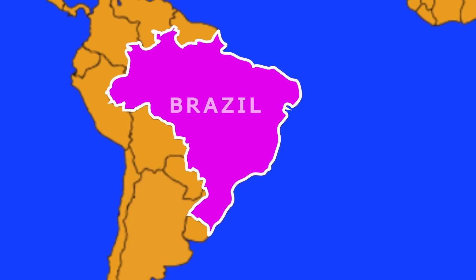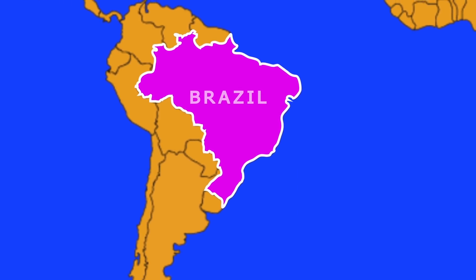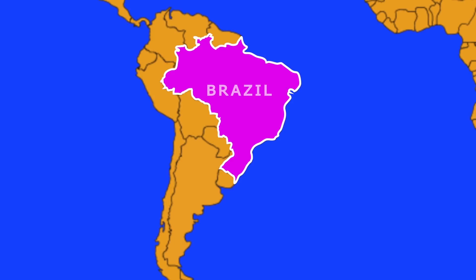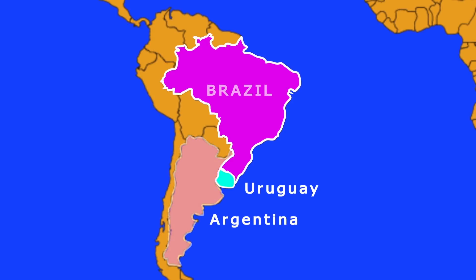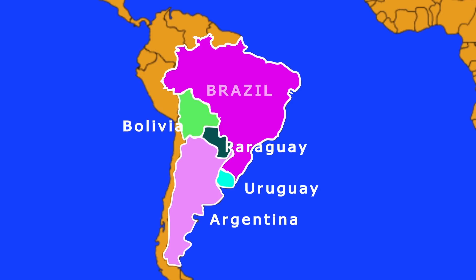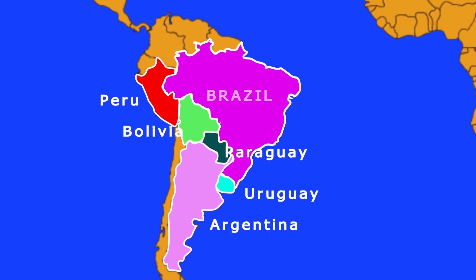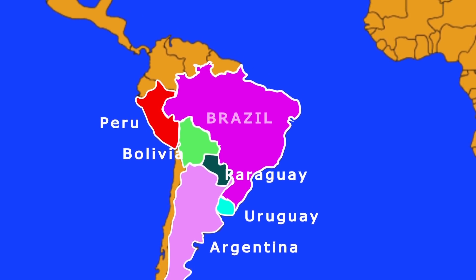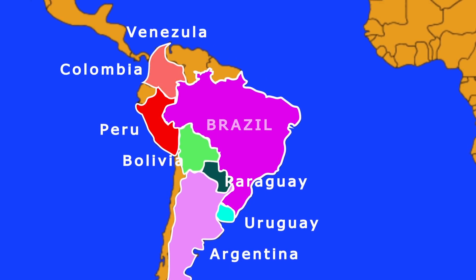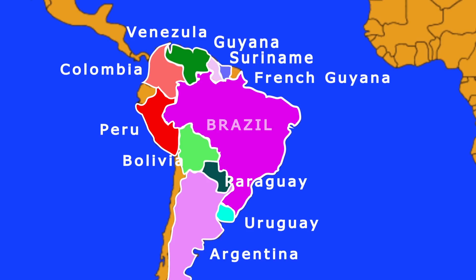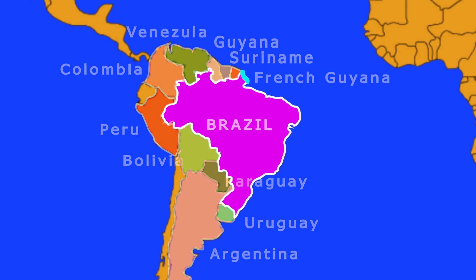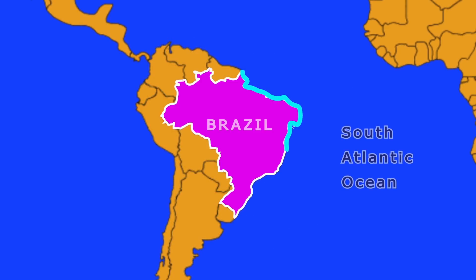The countries that lie to the south of Brazil are Uruguay, Argentina, and Paraguay. The countries lying towards its west are Bolivia and Peru. The countries lying towards its north are Colombia, Venezuela, Guyana, Suriname, and French Guyana. Brazil has a long coastline along the South Atlantic Ocean.